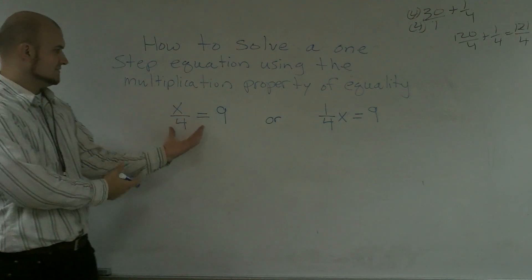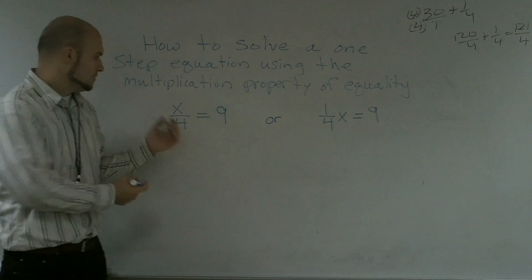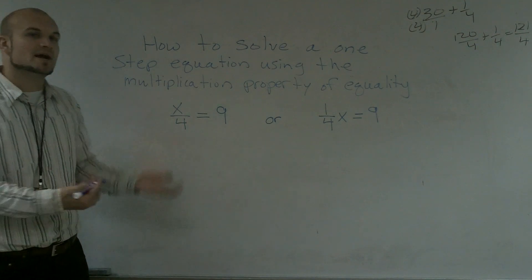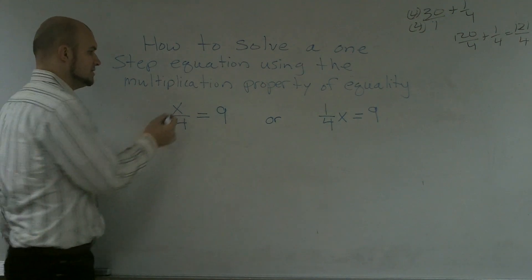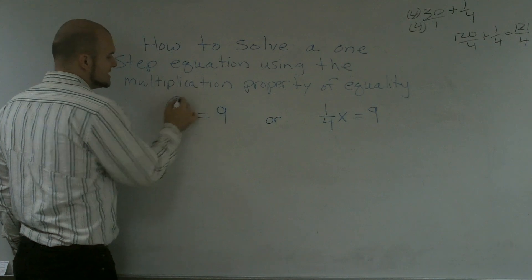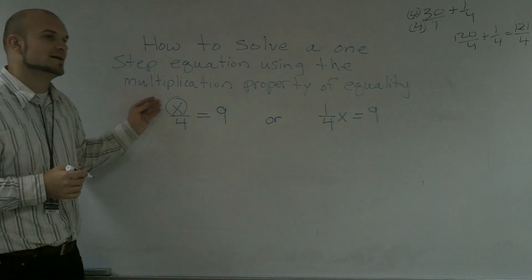So what I've looked at is, I've given you this problem: x over 4 equals 9. And what we need to do is, first of all, we need to get our x by ourselves, right? So I'm going to go ahead and circle my x, and that's going to remind me that I need to get this x by itself.